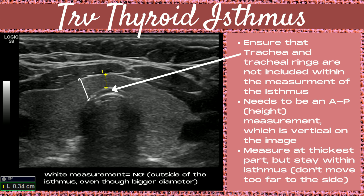Take an AP or height measurement of the thyroid isthmus in the transverse plane. Ensure that the trachea and the tracheal rings are not included within the measurement. The white arrow in this diagram points to the trachea, and right below that is a bright white hyperechoic line — that's a tracheal ring. Neither of these should be included in the measurement. You want a vertical height measurement, measured at the thickest part of the isthmus, but stay within the isthmus. Don't move too far to the side or you're no longer in the isthmus.